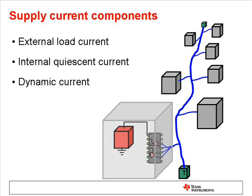The supply current for one RS-485 node includes the external load current, the internal quiescent current, and the dynamic current during signaling.